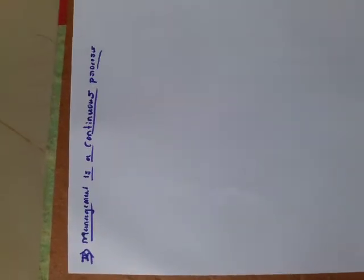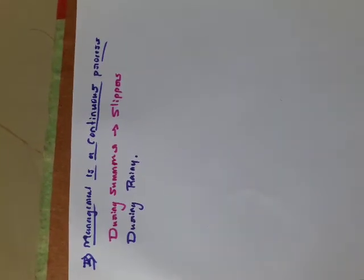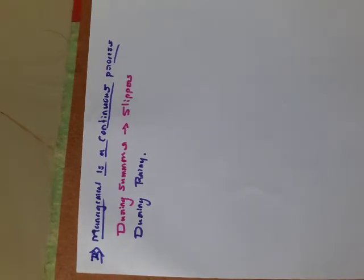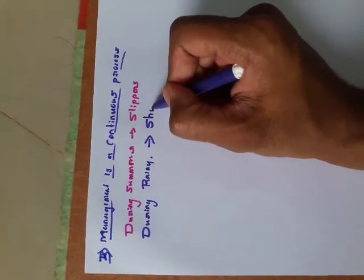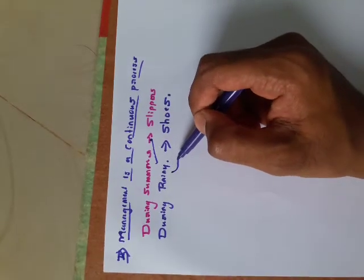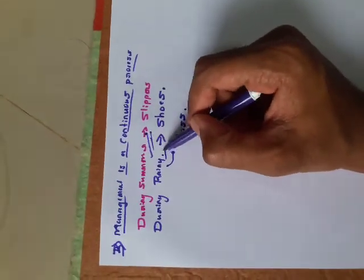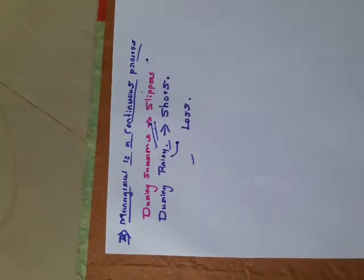The next characteristic of management is that it is a continuous process. Management is not a matter of one day or two days — throughout the entire life of a company, management is required. For example, a company manufacturing footwear: during summer it effectively manages by supplying slippers, but it also has to manage the rainy season, when customers prefer shoes to avoid rainwater. If you stick only to the summer season, you will face failure and loss in the rainy season. Therefore, it has to manage all seasons — summer, rainy, and winter. Management is a continuous process, not restricted to a particular day.